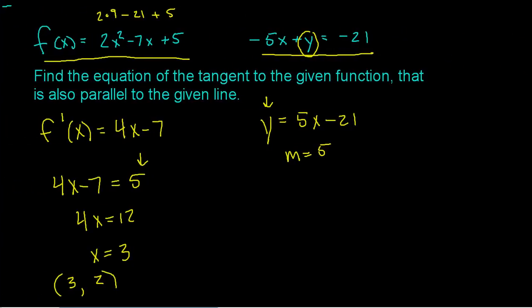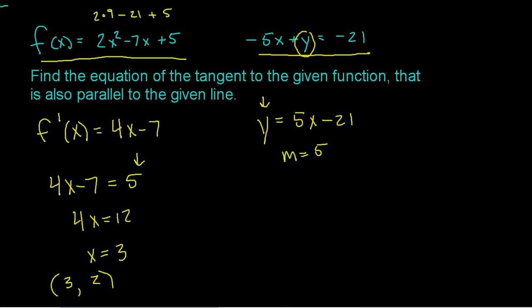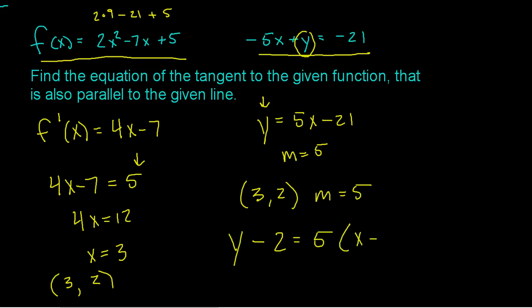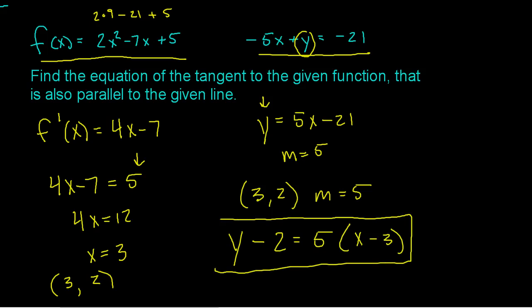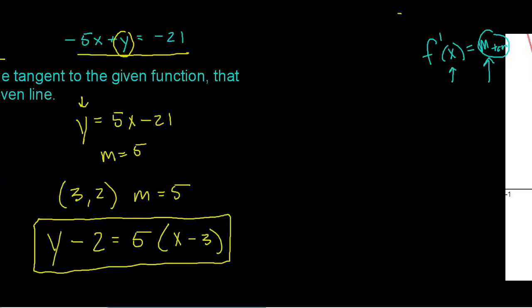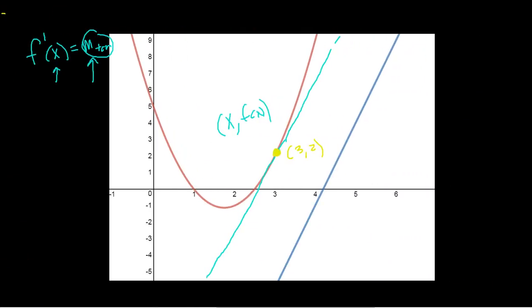Now I need to find the equation of the tangent line. Now that I know the point of tangency and I already know the slope, all I have to do is put it into proper form: y minus 2 equals 5 times x minus 3. And right there is an equation of the tangent line — both parallel to the blue line that was given and tangent to my function in red.